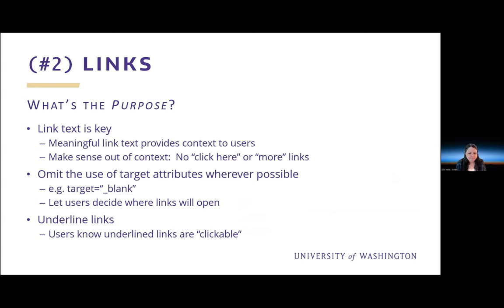Emily has a question: any advice on alt text for maps? That's a great question. When you have an image that is too complex to describe in 140 characters or less, please still provide a brief alt text description — a brief overview of what it is. And then you can state in your alt text that more is described in the surrounding text, so users know to go there to look for it. You're still using alt text, but directing them to additional information.